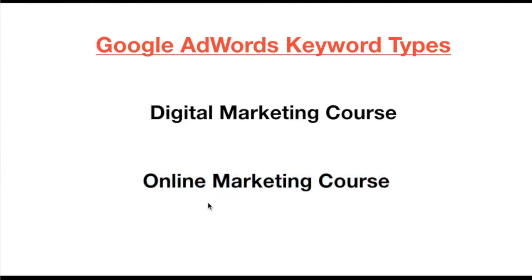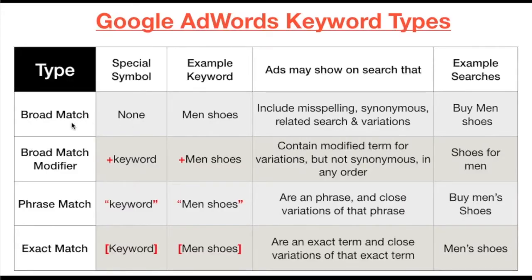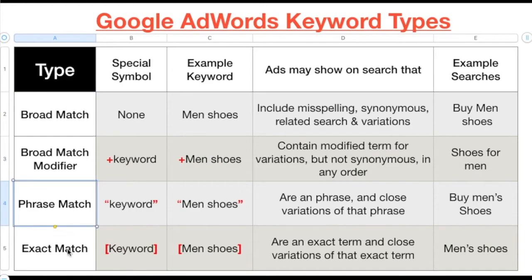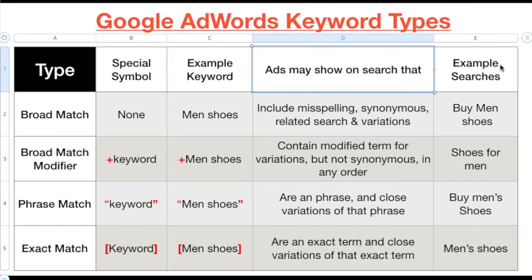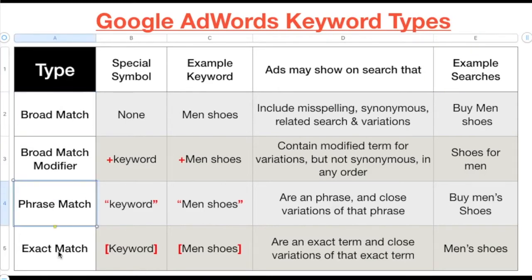There are generally four, or you could say five, types of keywords. Today we'll discuss four: broad match, broad match modifier, phrase match, and exact match. There's also a fifth type called negative keyword, but we'll cover that in the next video. In the flowchart, I've shown each keyword type with its special symbol and example searches.